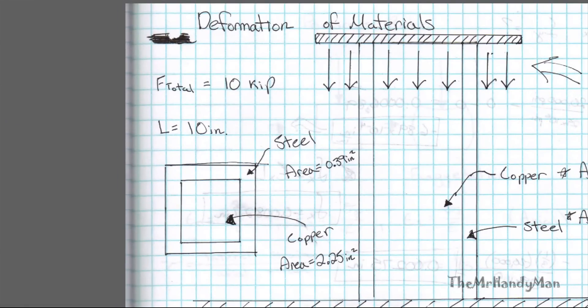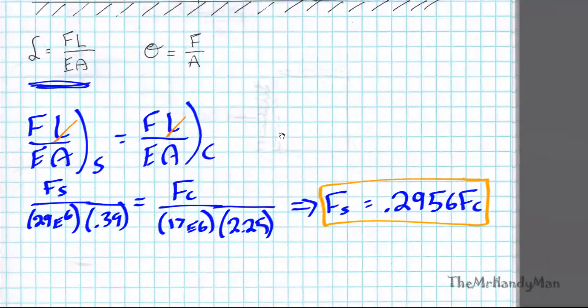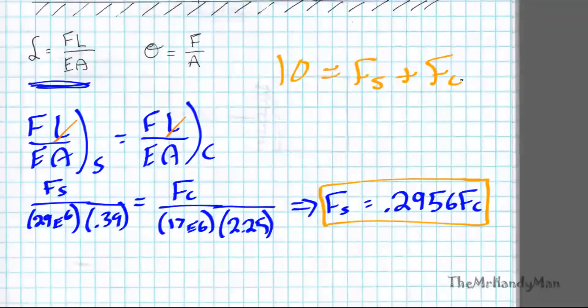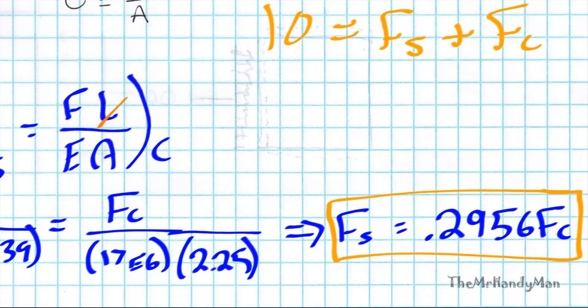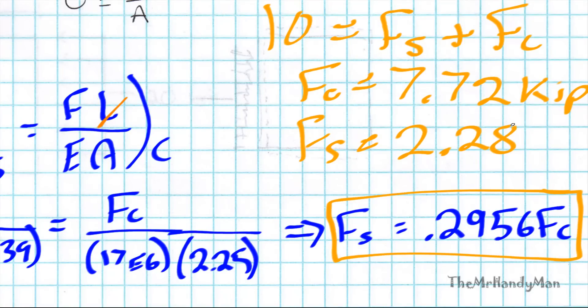Is 10 kips right up here. Then we know that 10 kips needs to equal Fs plus Fc. And I can solve the math for you, but Fc turns out to equal seven point seven two kips. That's just using the equation below. And steel is going to be the remainder, which is two point two eight kips.